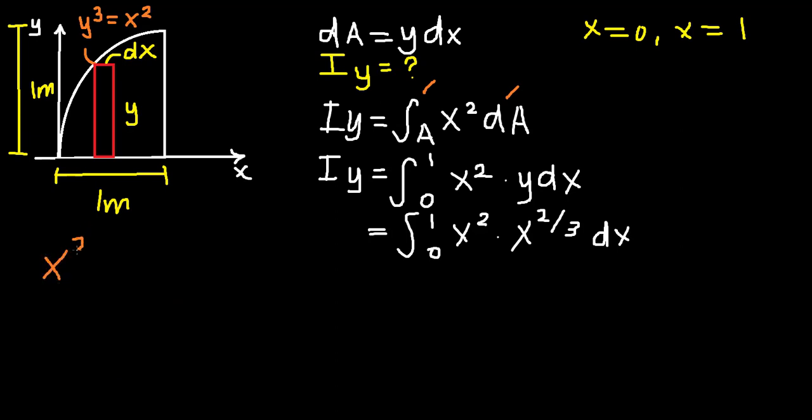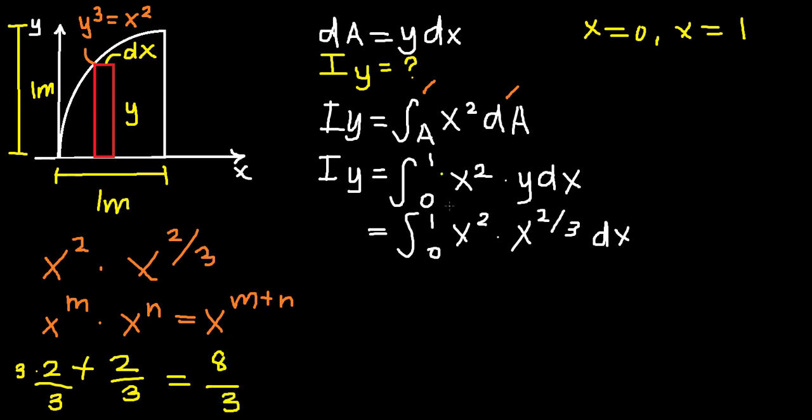Now we have our x squared multiplied by x^(2/3). So basically, if this was m and this is n, it will only equal to the sum of their exponents. Same thing applies, so we're going to do that for our 2 and 2/3. So that's 6 plus 2, that's 8, so that is 8/3. So our new term is going to be x^(8/3) dx.